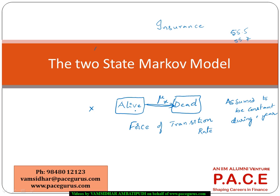In a two-state Markov model, we are looking at a person being alive and moving to a death state depending on their age x. The force of transition, mu_x, varies with age. For people at a very high age like 75 or 80, the force of transition to death is very high. But for a person aged 30, the force of transition could be much lesser.